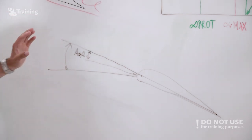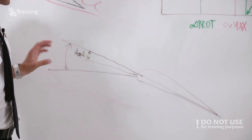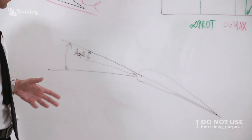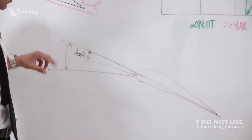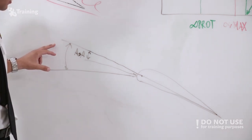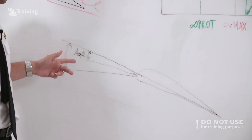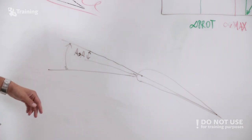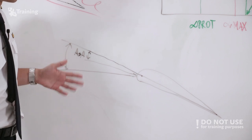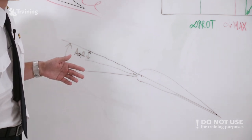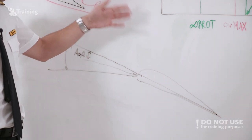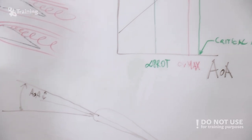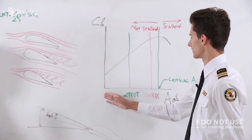Don't confuse the angle of attack with the pitch angle, because in one scenario you might have a pitch angle of 20 degrees while your angle of attack is just 5 degrees. To better understand this, we'll go to the lift versus angle of attack graph and my colleague Mindegas will explain what happens.